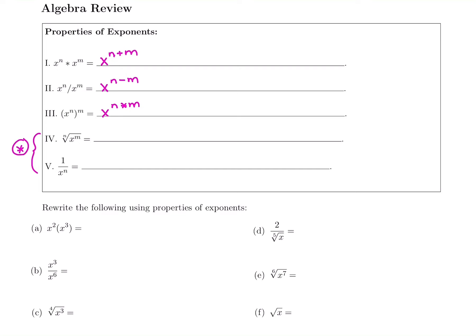We have the nth root of x to the m. Every time you see a root, we're going to think of it as a fractional exponent. We make it into a fraction, and it goes power over root. So m gets to be on top because that's the power, and n, the root, goes on the bottom. It is always power over root — the more powerful one gets to be on top.